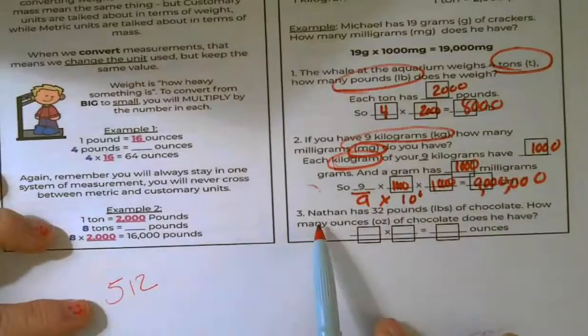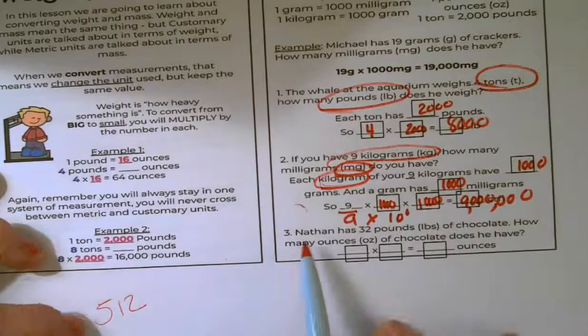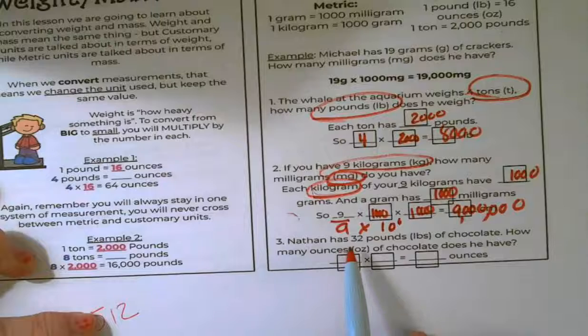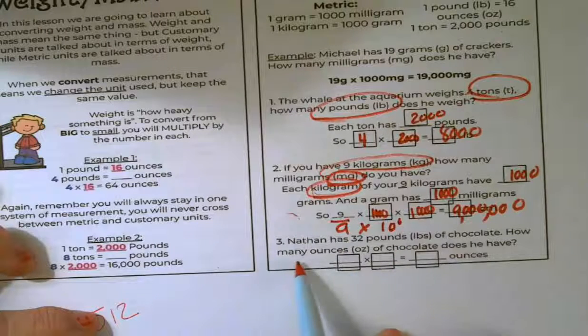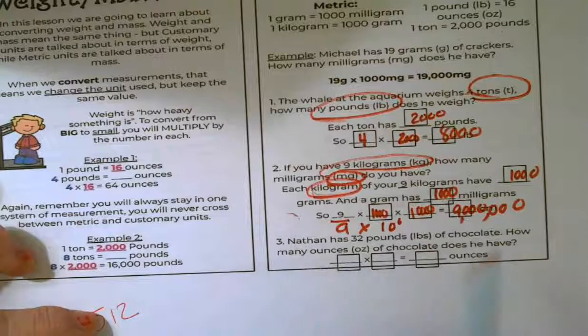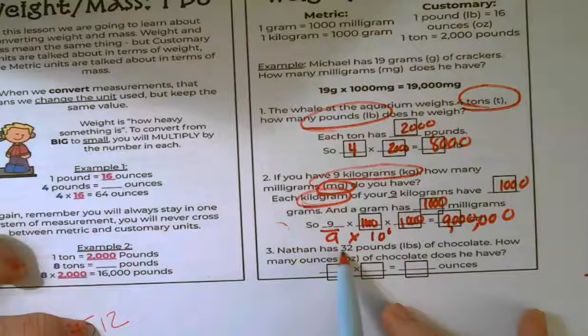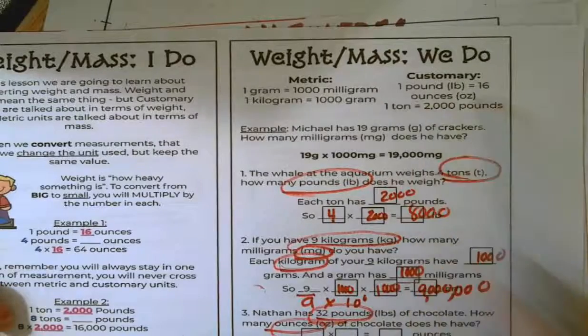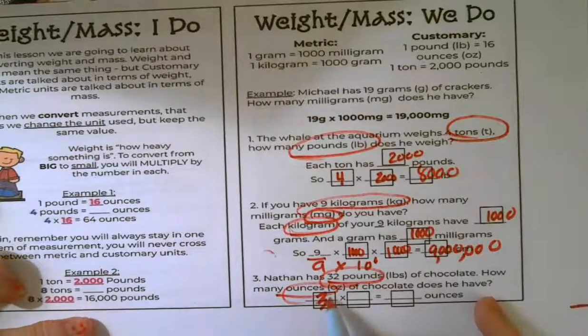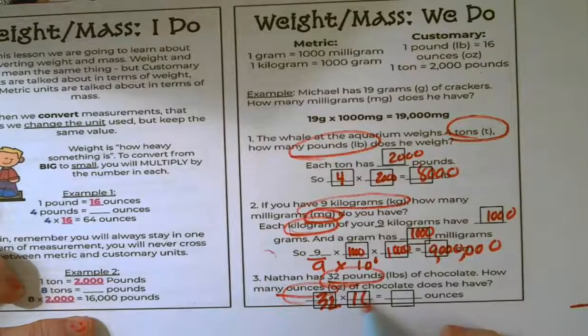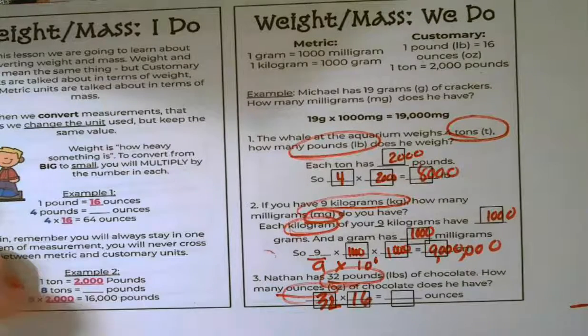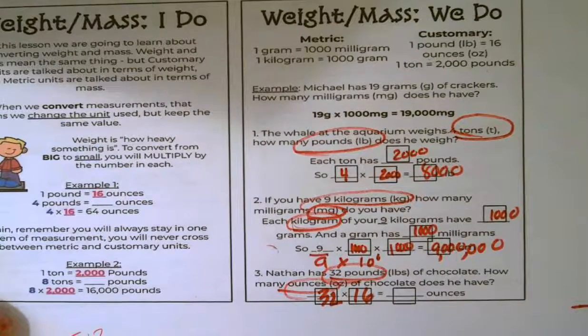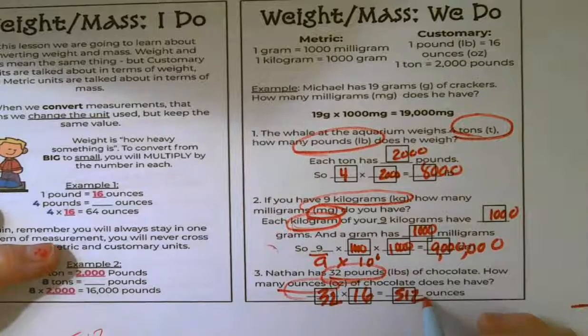All right. And the last one on this guided through example, Nathan has 32 pounds of chocolate. And how many ounces of chocolate does he have? So we're converting from 32 pounds to ounces. So that is just one step down here. So I'm going to start out with the 32 pounds. I'm going to multiply it by 16. And I've already checked. 32 times 16 is equal to 512 ounces.